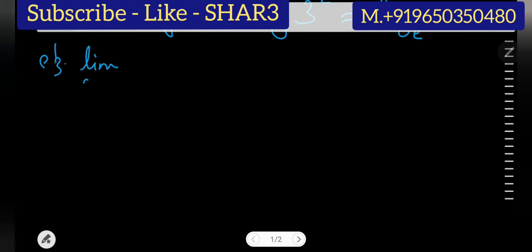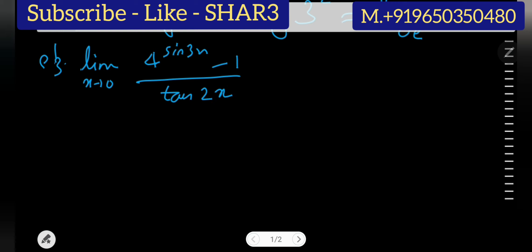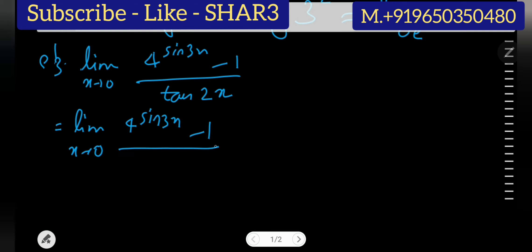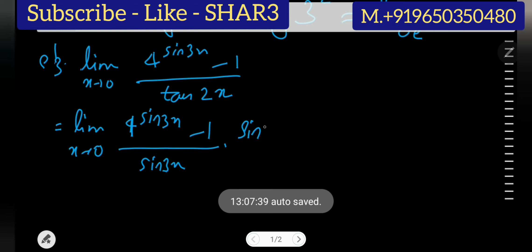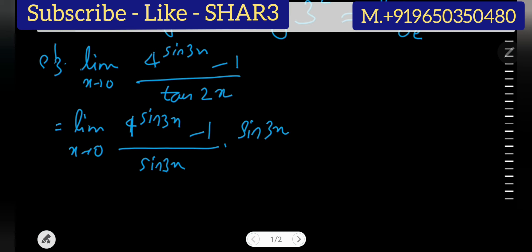Suppose we have: limit x approaches 0 of (4 to the power sin3x minus 1) upon tan2x. Again, you can verify this is 0 by 0 form. We focus on the exponent of 4, which is sin3x, and write sin3x in the denominator, multiplying by it as well. Keep in mind we have not yet written the tan2x which was in the original denominator.